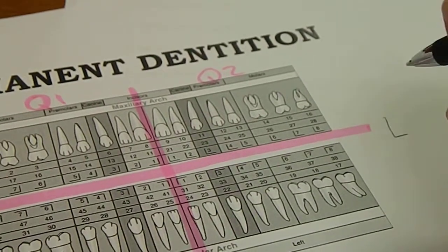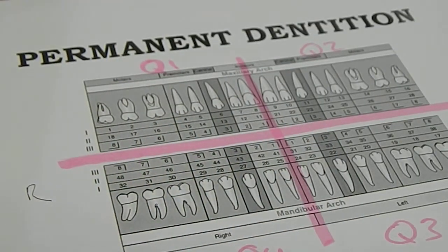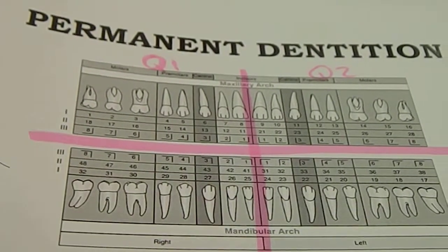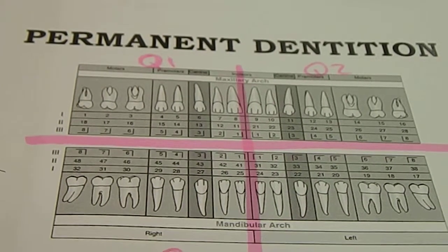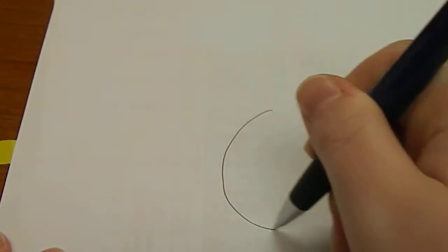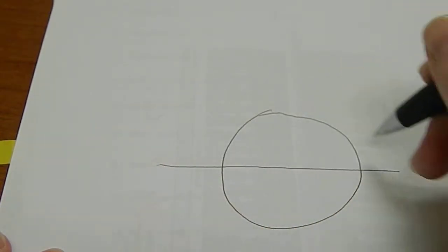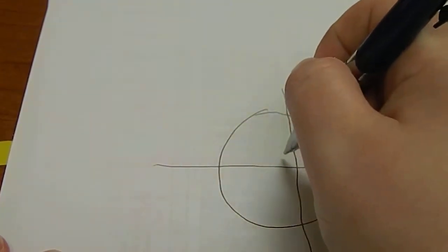Just remember: when you're looking at a person, your right is their left and your left is their right. Something I like to do when I first sit down to do dentition exercises is draw a dentition out. I'm going to give you paper when you take your tests, so basically you're drawing a mouth and dividing it into quadrants.